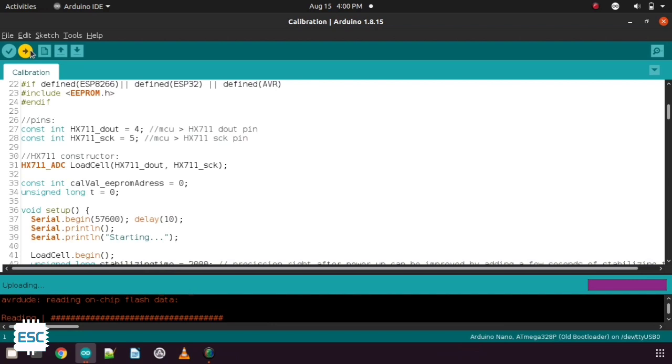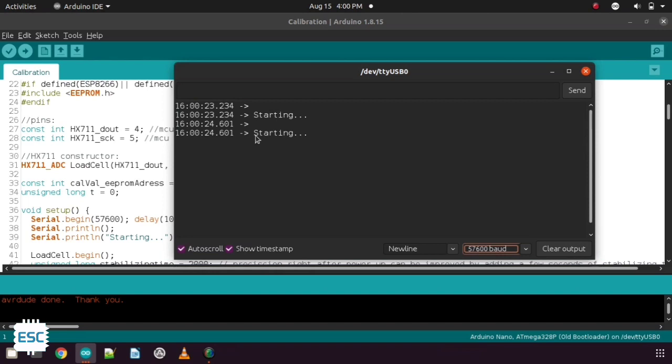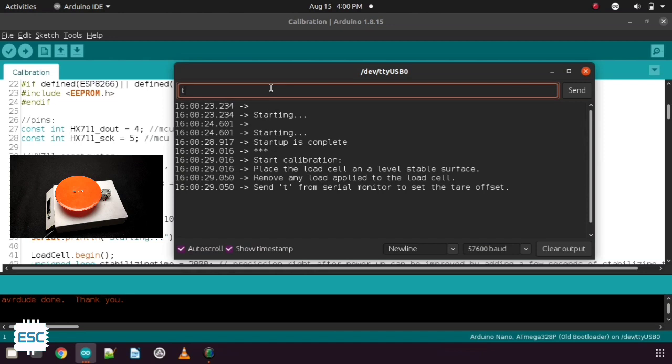After uploading, open the serial monitor and select baud rate as 57600. And you can see the starting message. Now place our weighing machine on a flat surface and type T and send.